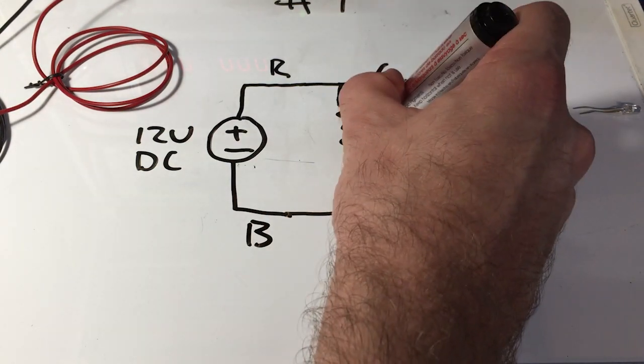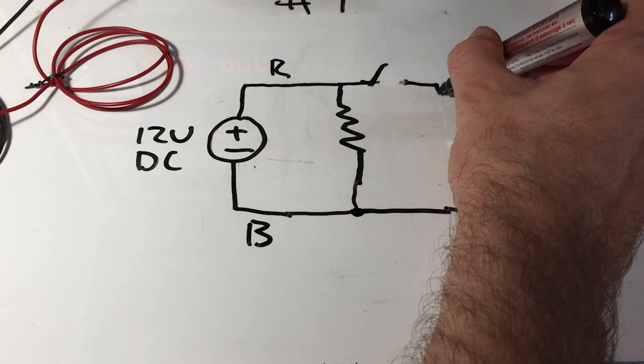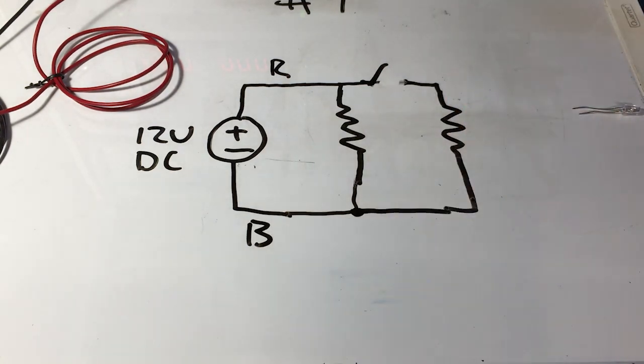You've seen resistors now probably plenty in the class. So instead of having those filaments in there, we could put in those two resistors.